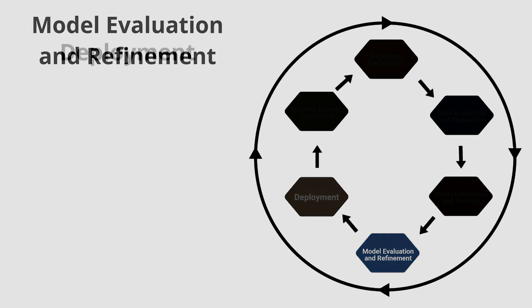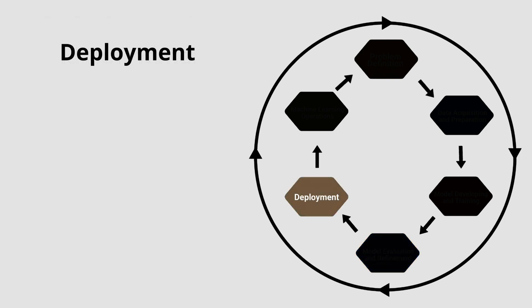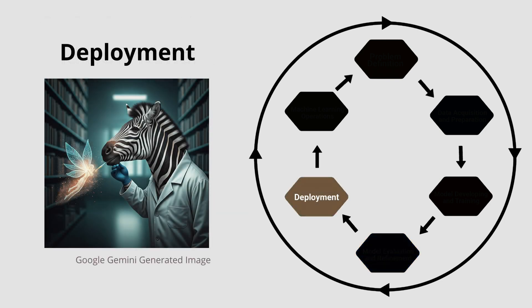The fifth phase is deployment. Once the model is performing well, deploy it to a production environment so that it can start providing some value and so that you can start understanding how it performs in the wild. Here, you might integrate the model with existing systems, create a new application or service that uses the model, and set up A-B tests.